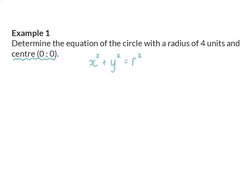It is only necessary to calculate the value of r or r squared, because just like with any standard equation for a graph, x and y stay as variables. In this case, we were given that the radius is 4 units, so we substitute: x squared plus y squared equals 4 squared, which simplifies to x squared plus y squared equals 16.